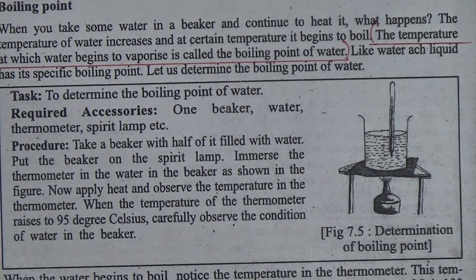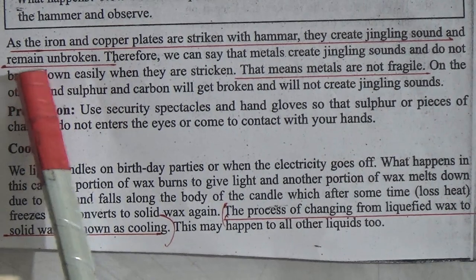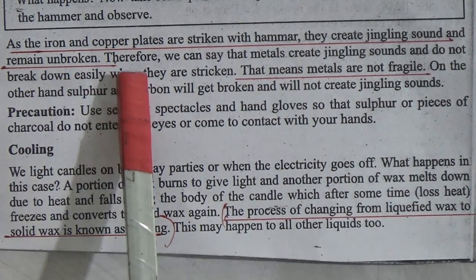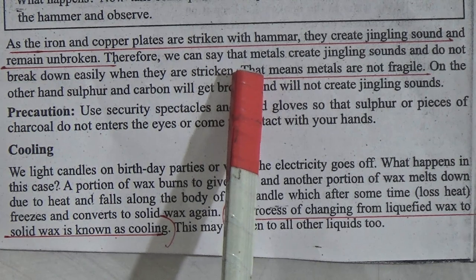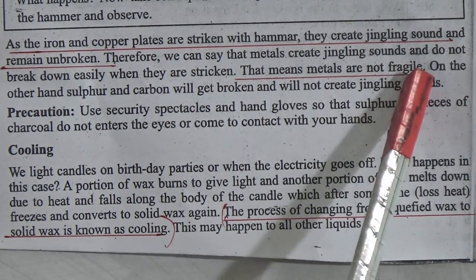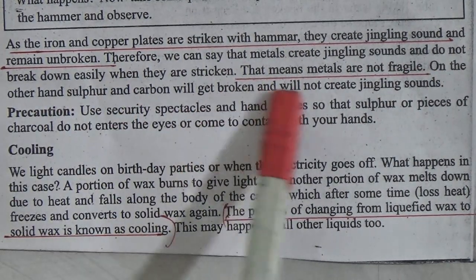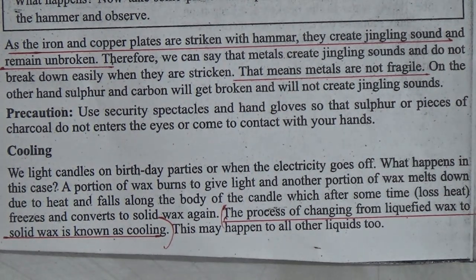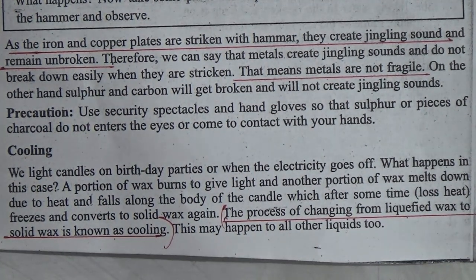When iron and copper plates are struck with a hammer, they create a jingling sound and remain unbroken. Therefore, metals create a jingling sound and do not break down easily when struck. On the other hand, non-metals like sulfur and carbon will get broken and will not create a jingling sound when struck.